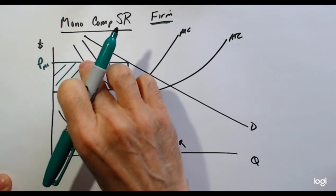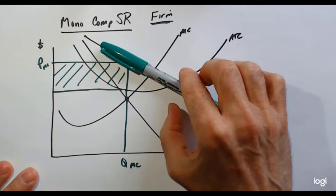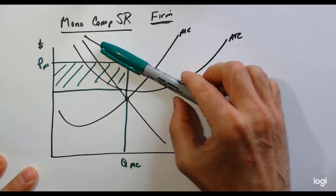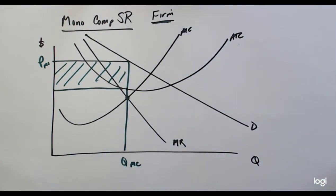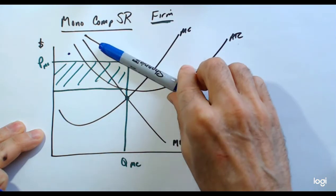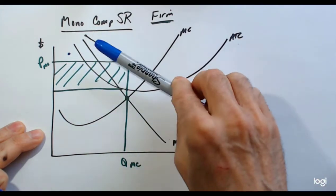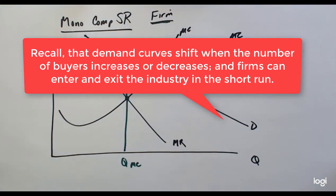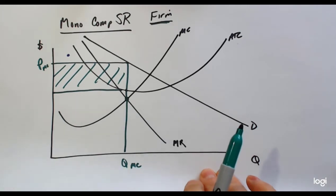It's important to recognize this is a short run because there is a degree of competition in this market. When other firms see these profits they want to steal them — they want to compete them away. What's going to happen is this demand curve is going to shrink for this firm, because there are going to be new companies entering the market. This demand curve will shift down until it becomes tangent to the average total cost curve. So in the short run firms can have profits, but they're going to be competed away pretty quickly and we'll end up in a long run equilibrium.